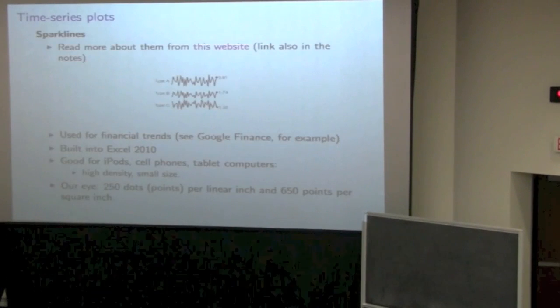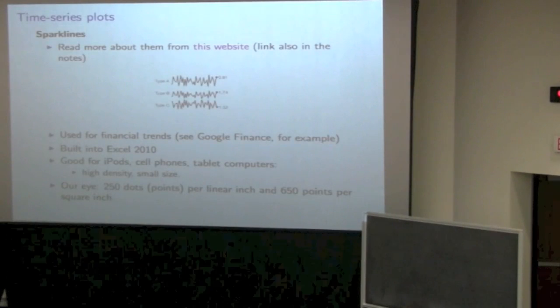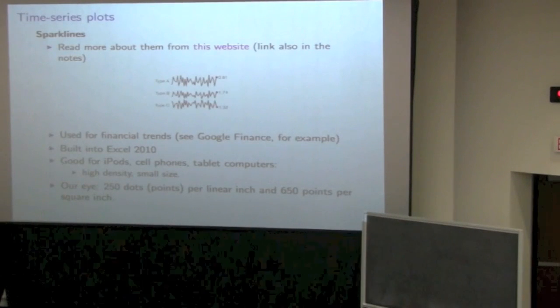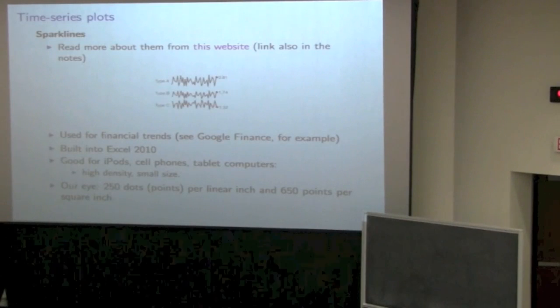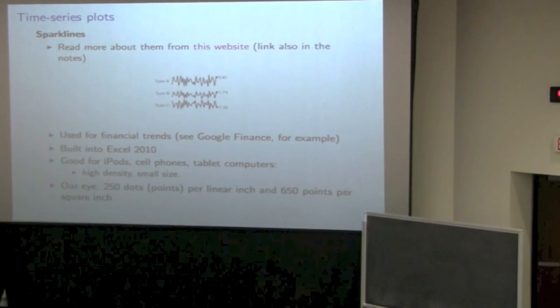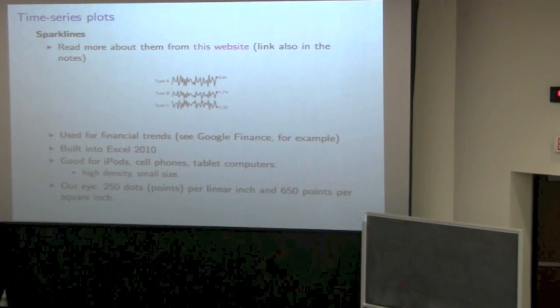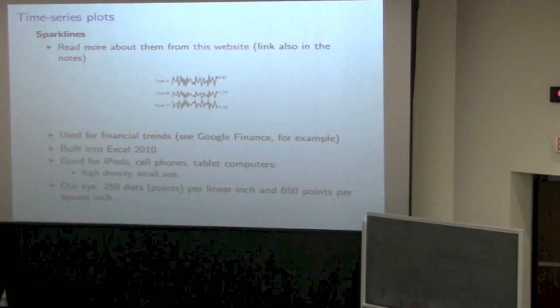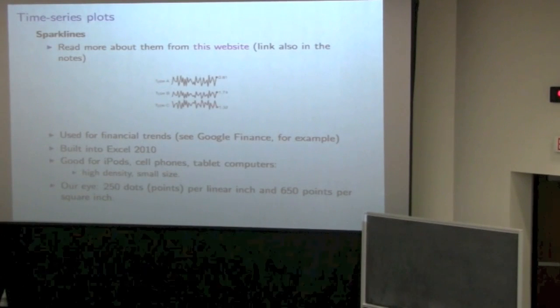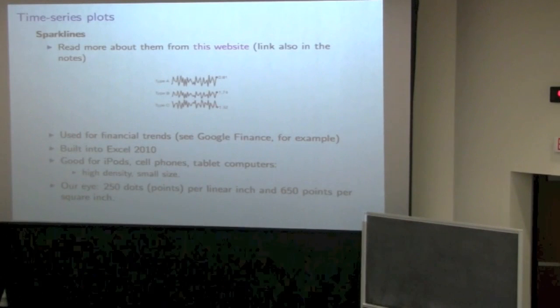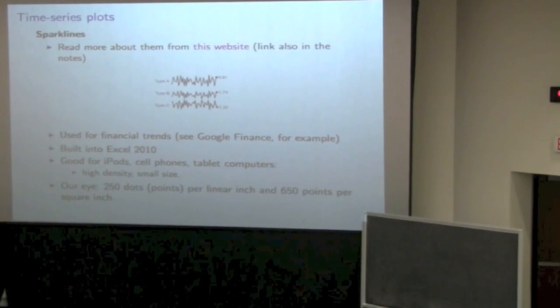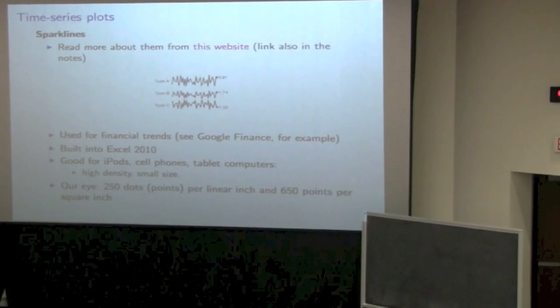Here's another interesting thing to bear in mind about our human eye and its amazing capability. Our eye can see about 250 dots per linear inch. So one inch, you can make out 250 screen points. In a square inch, you can make out about 650 points. That's phenomenal resolution that we have with our eye.